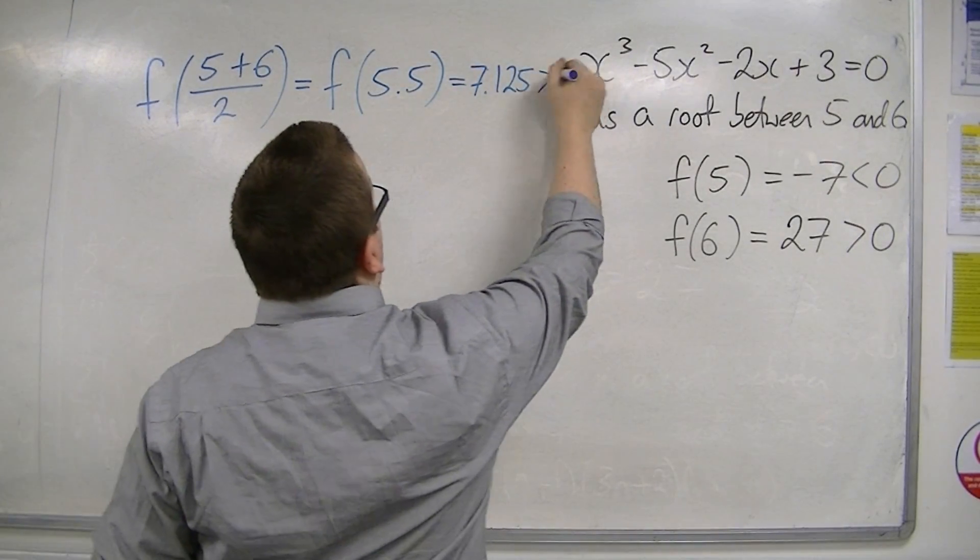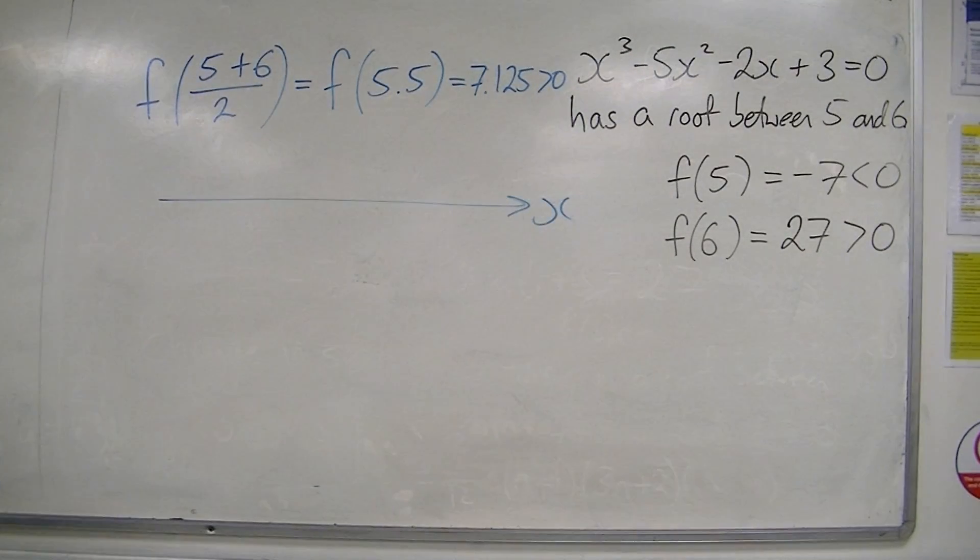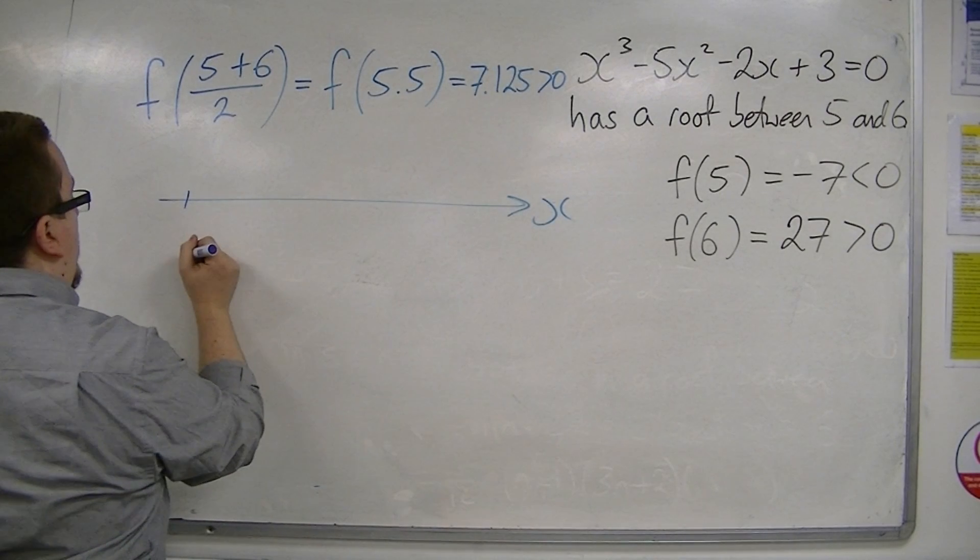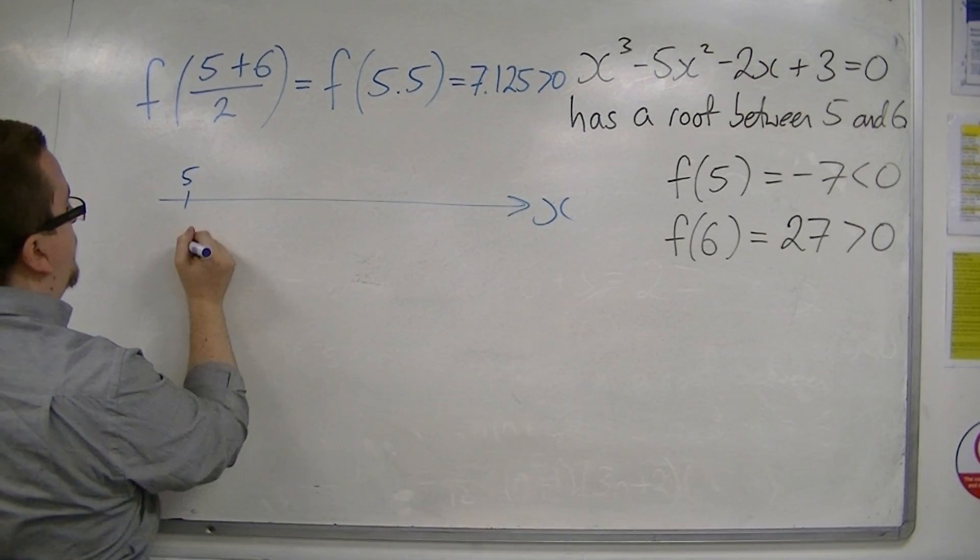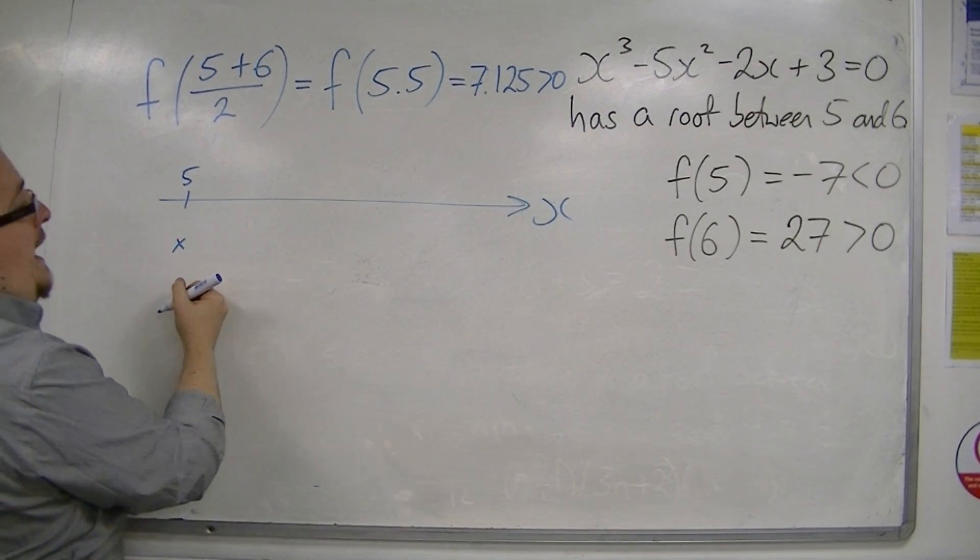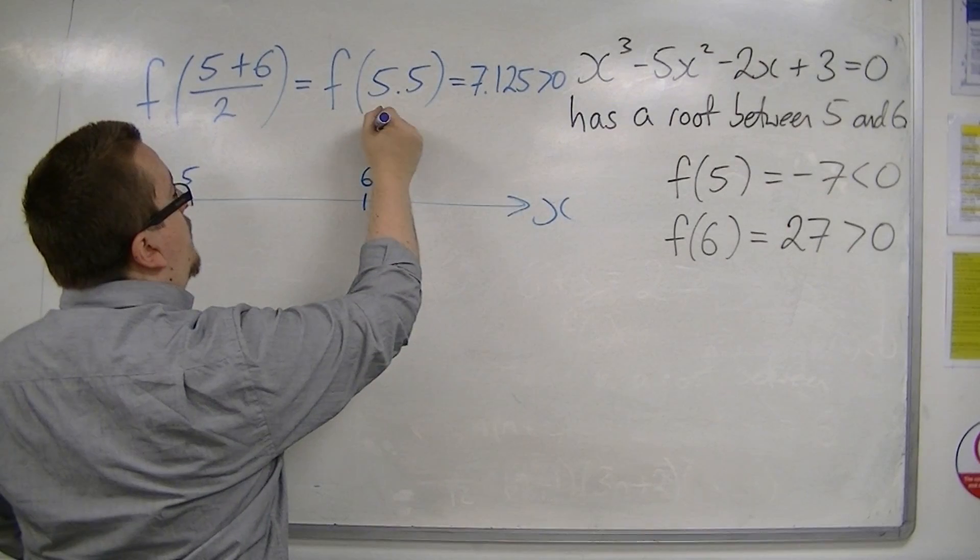Okay, so that's greater than 0. So what we've found, if this is my number line for x, is that f of 5 was down here at minus 7, and f of 6 was up here at 27.